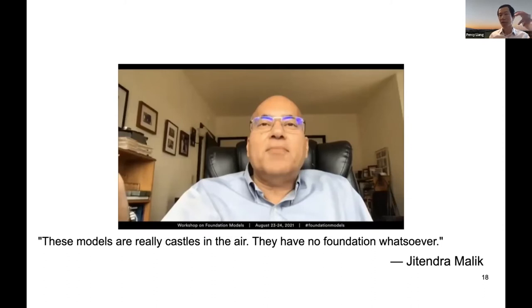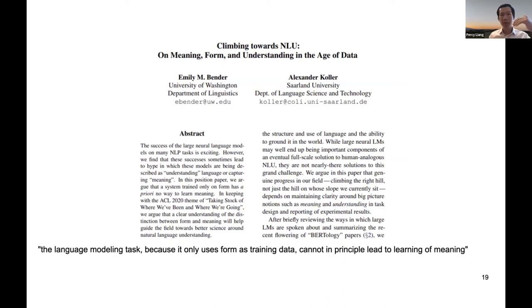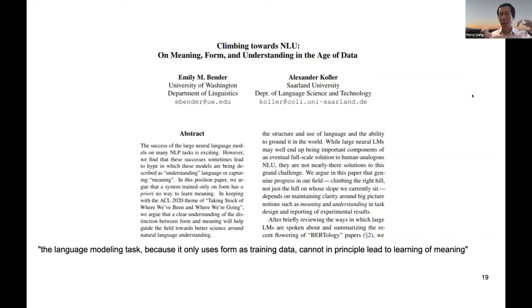It was at our workshop that Jitendra Malik declared in a rather heated panel that these models are 'castles in the air — they have no foundation whatsoever' — arguing that these models are somehow fundamentally deficient. That's why it's the title of my talk. There's also skepticism within the NLP community: some argue that because the language modeling task uses form — just symbols and words — as training data, it in principle can't lead to the learning of meaning, which involves actual grounding to the real world.